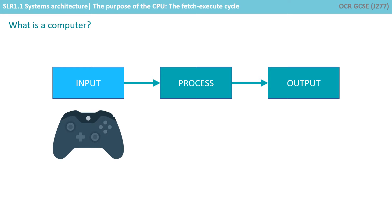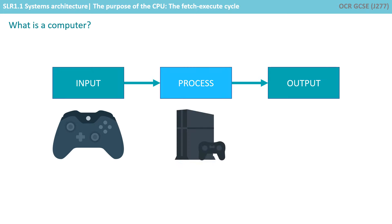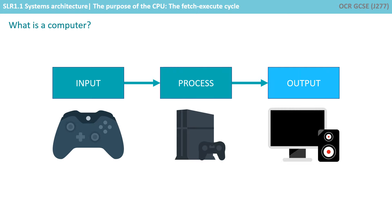But this could be way more complex. For example, with a game console, the input could be the buttons you press on a controller. The processes would then be carried out by the console itself. And the output would be some form of update to a monitor and sound out through a speaker, possibly vibration feedback through the controller.